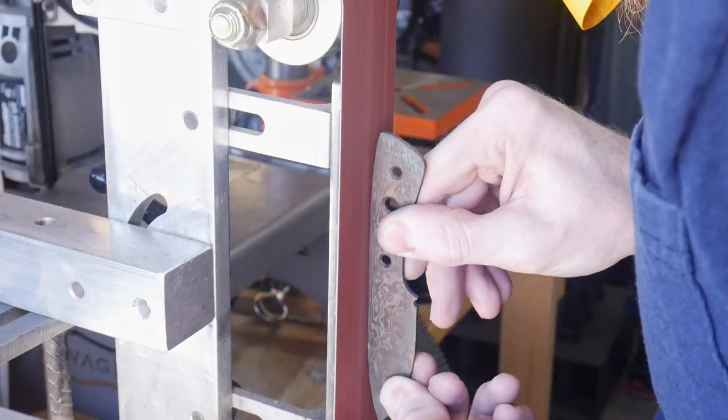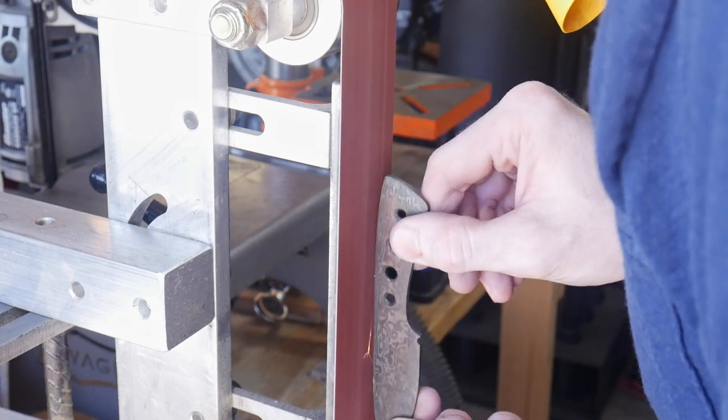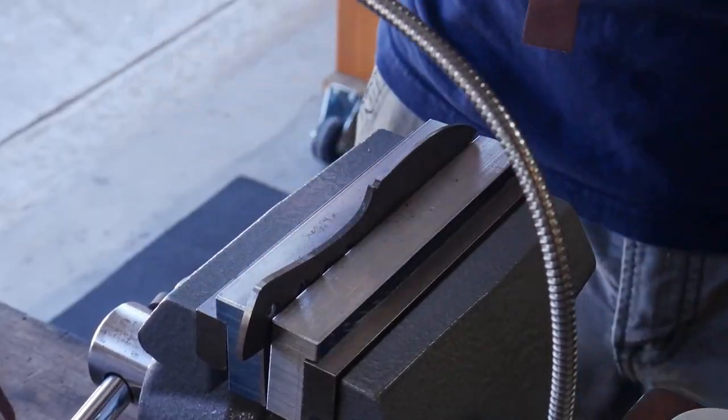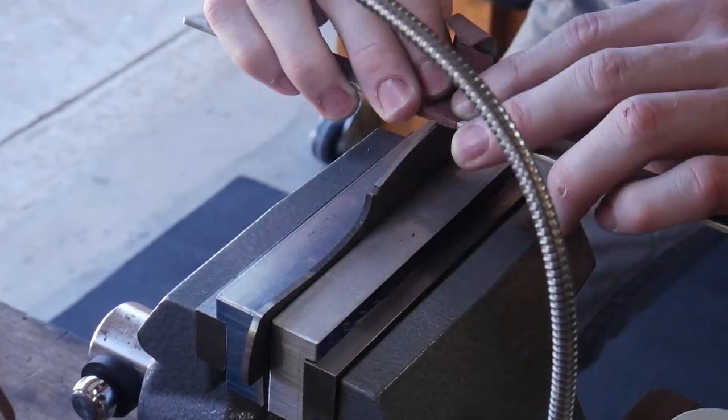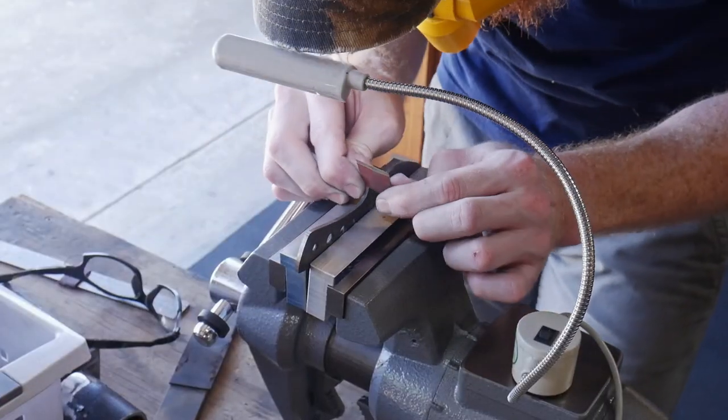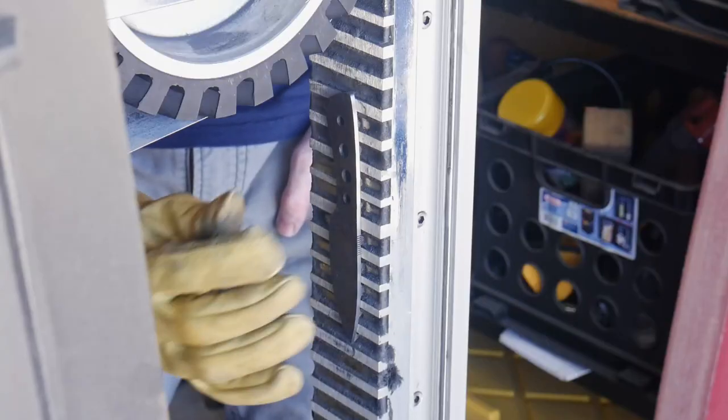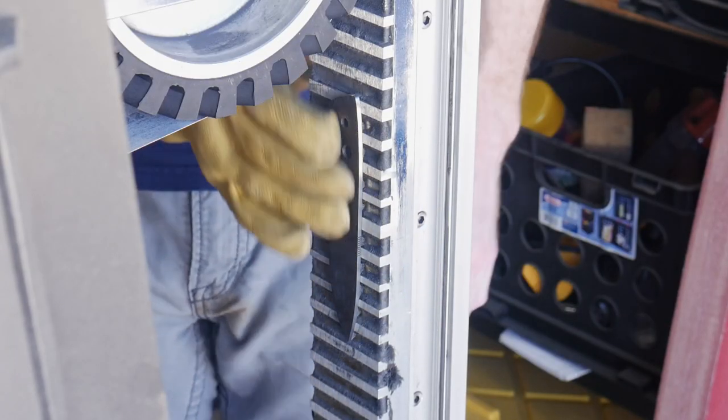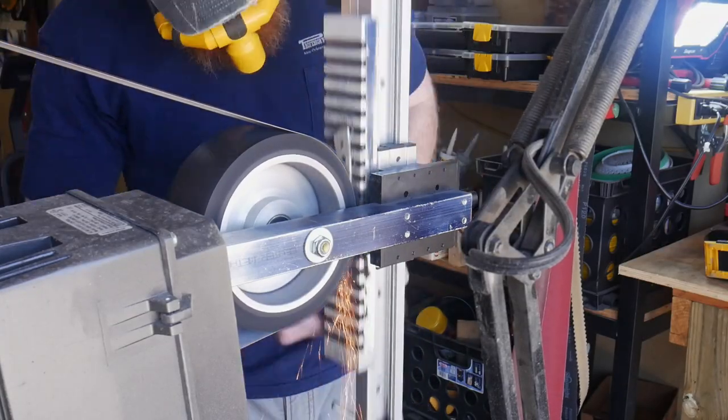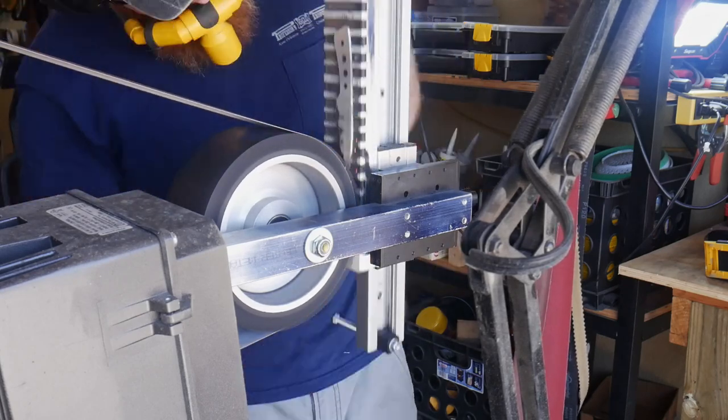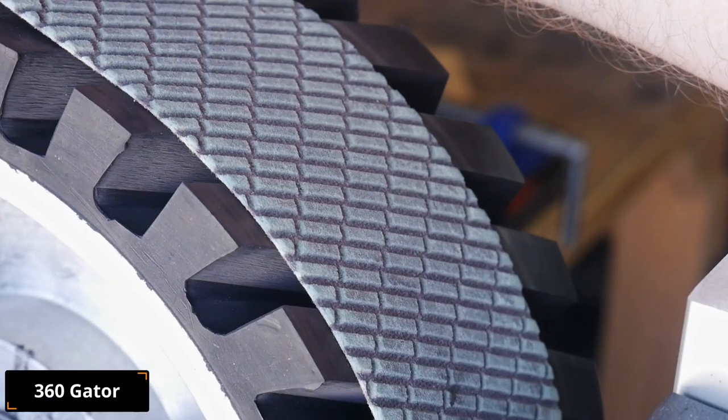After the tempering process, I clean up the spine of the knife to a 220 grit finish and then put some diagonal scratches along my edge so that I can see my scribe lines that will be my target for my edge when I grind. I also want to clean up the edge area to make sure there's no decarb along that edge so I have a nice strong hard edge for my finished blade.